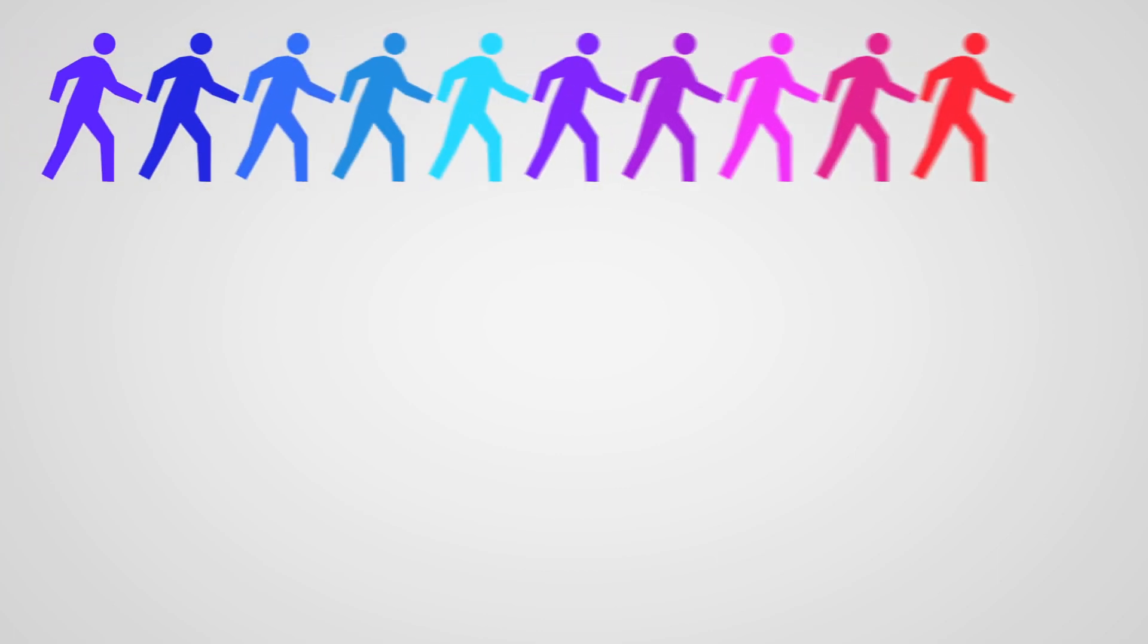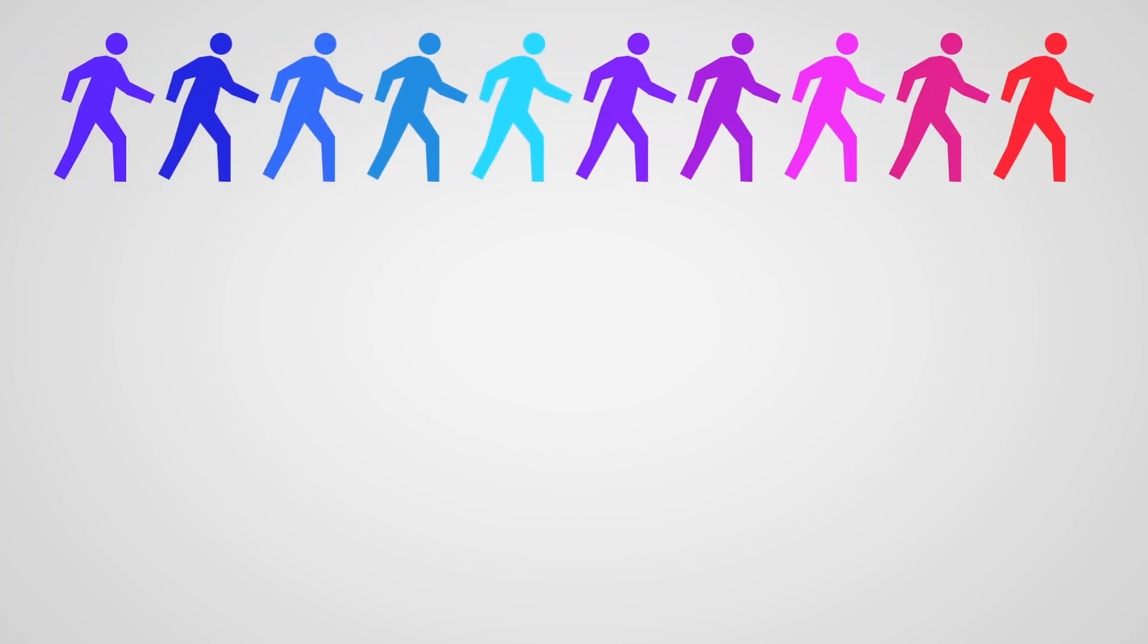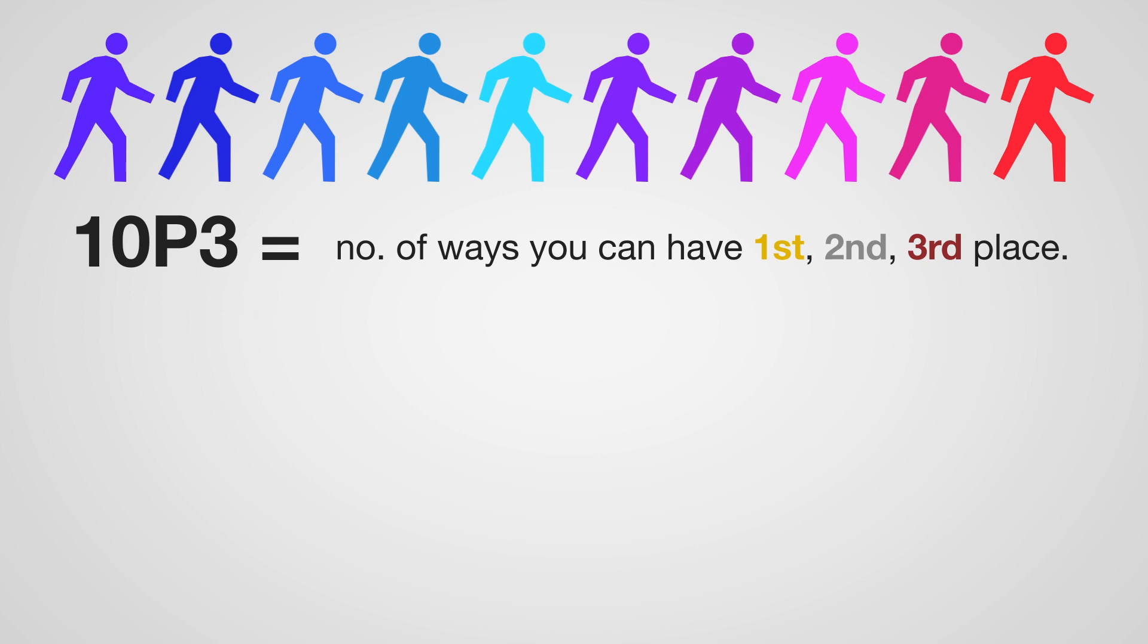An example of permutation without repeating is ten people running in a race. 10P3 is the number of ways you can have first, second, and third place.